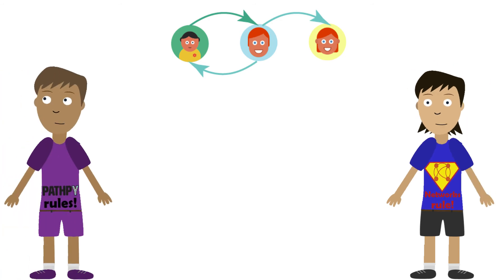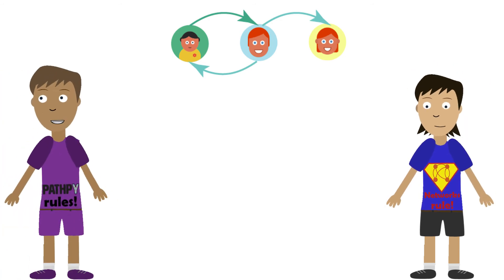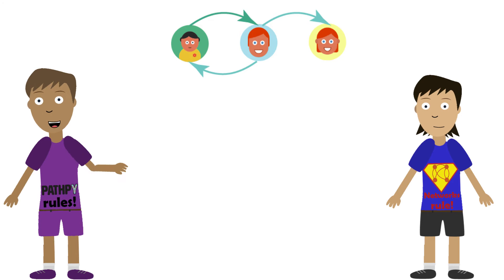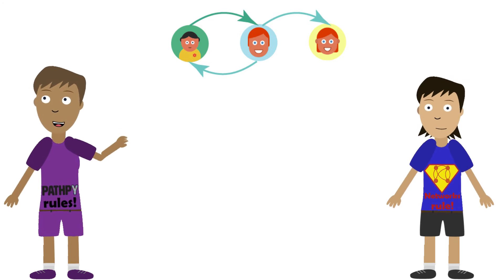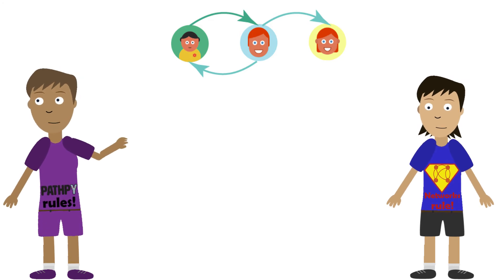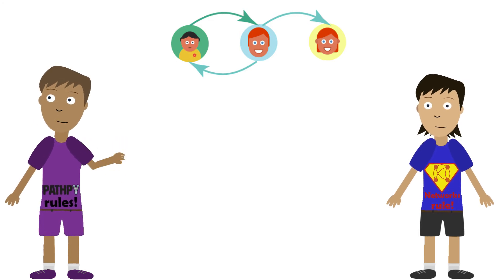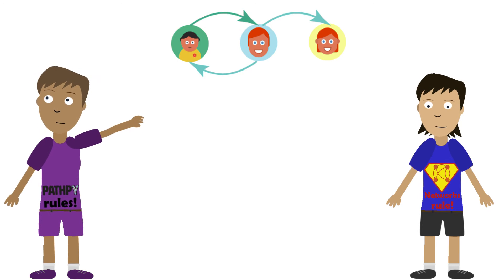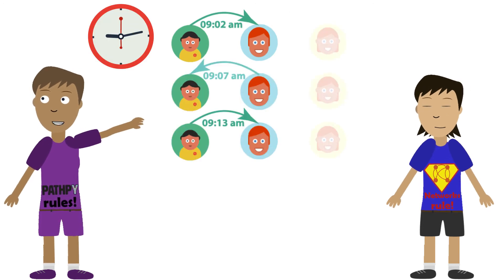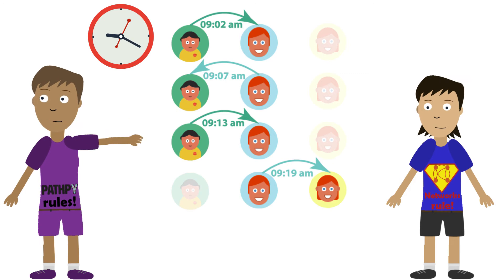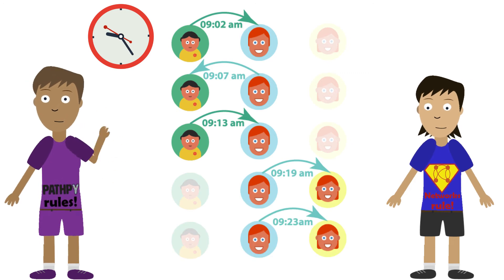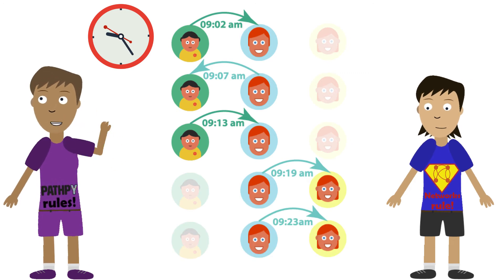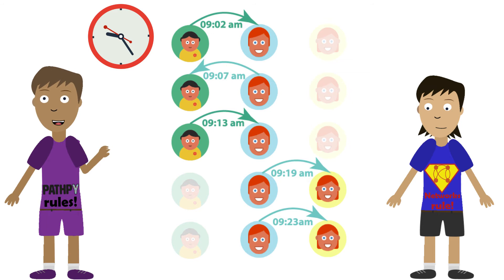Hi, Nettie. Sure, network models are great to analyze relational data, but what if we have more than just relations? Think about user click paths on the web or time-stamped social interactions on Facebook. Such time series data not only tell us who's related to whom, but also when and in which order relations occurred.